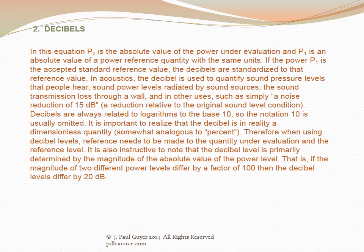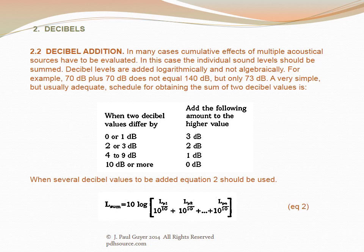The decibel is in reality a dimensionless quantity, somewhat analogous to percent. When using decibel levels, reference needs to be made to the quantity under evaluation and the reference level. If the magnitude of two different power levels differ by a factor of 100, then the decibel levels differ by 20 decibels. In many cases, cumulative effects of multiple acoustical sources have to be evaluated, and individual sound levels should be summed.